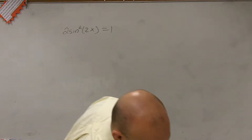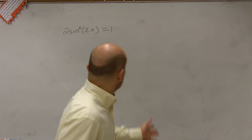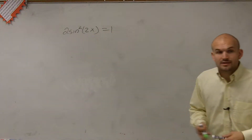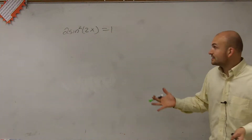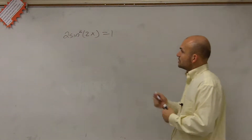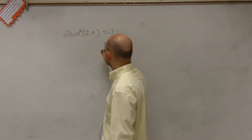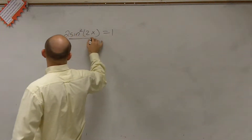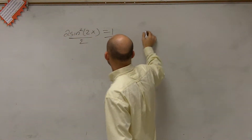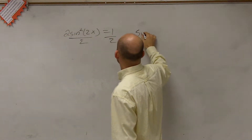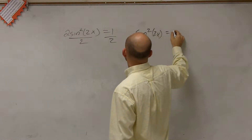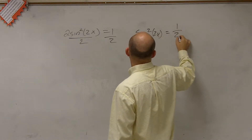Let's take a look at this. If I have 2 sine squared of 2x equals 1, the main important thing is solving for the sine. So when solving for the sine, we're just going to divide by 2. And therefore, we get sine squared of 2x is equal to 1 half.